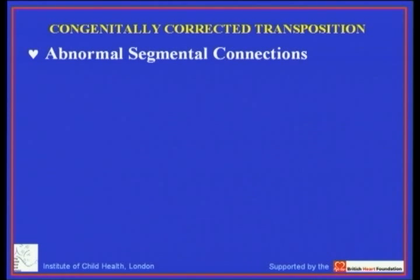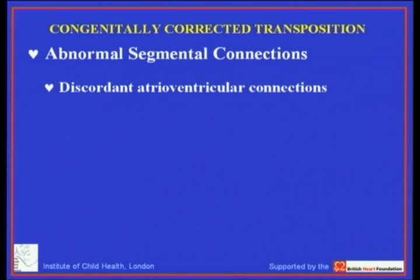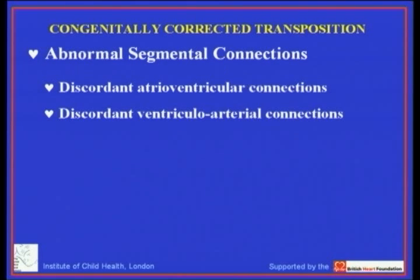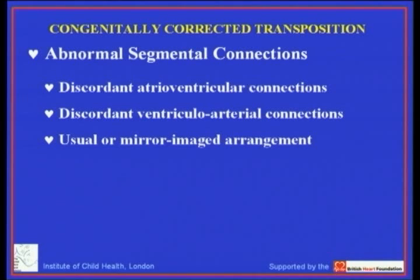We're going to talk about the second important variant of transposition: congenitally corrected transposition. This involves a combination of abnormal segmental connections — discordant connections at the atrioventricular junction combined with discordant ventricular arterial connections. Those two abnormal connections cancel each other out, so some call it double discordance, and we can find it in either the usual form or the mirror-imaged variant.